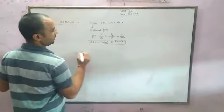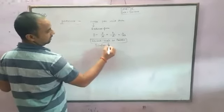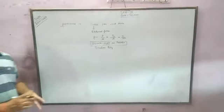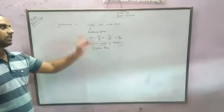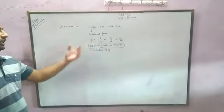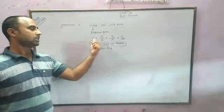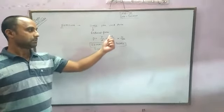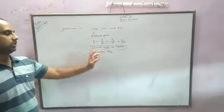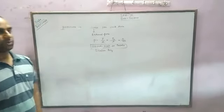Pressure is a scalar quantity. These are the revisions of pressure. Pressure is external force acting per unit area, represented by symbol P. Pressure equals force upon area, perpendicular force upon area, equal to Newton per meter square as the unit. This is called Pascal, and it is a scalar quantity.